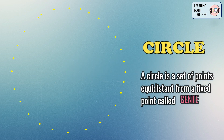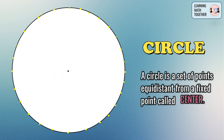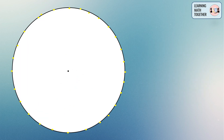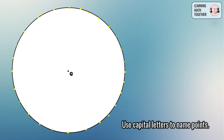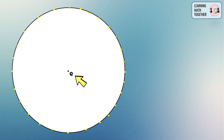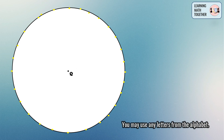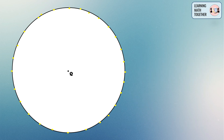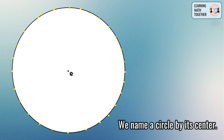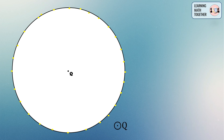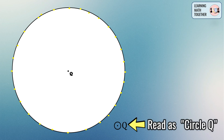Let us first define circle. A circle is a set of points equidistant from a fixed point called the center. We name points using capital letters, so I'll be using Q here, but you can use any letters from the alphabet. We simply name a circle by its center, so we have here circle Q.